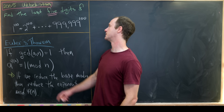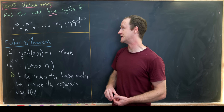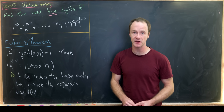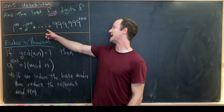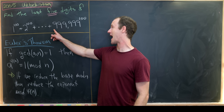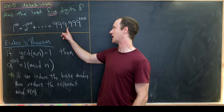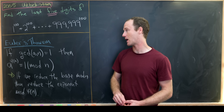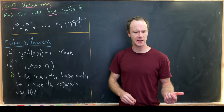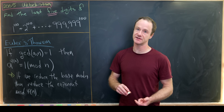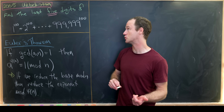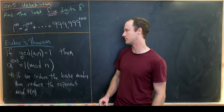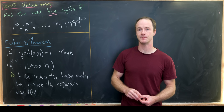So we're going to find the last five digits of 1^100 + 2^100 + 3^100 + ... ending at 999,999^100. One of our main tools — a standard tool when working on these last-digit problems — is Euler's theorem.